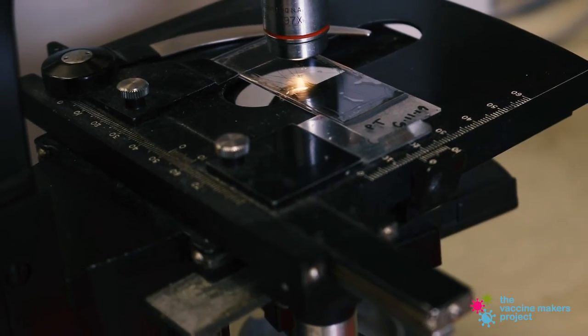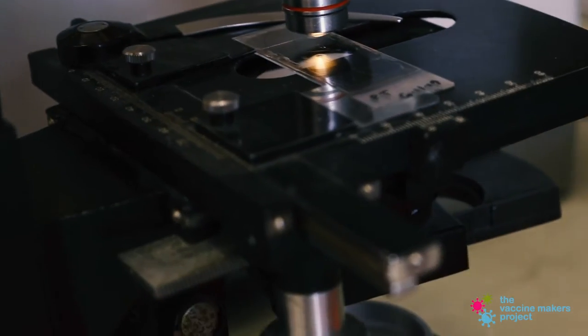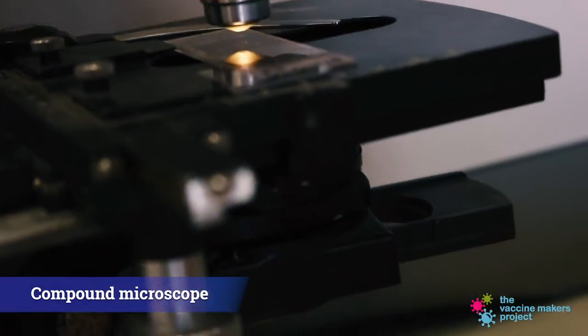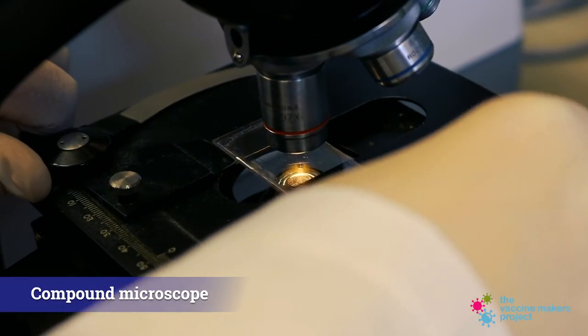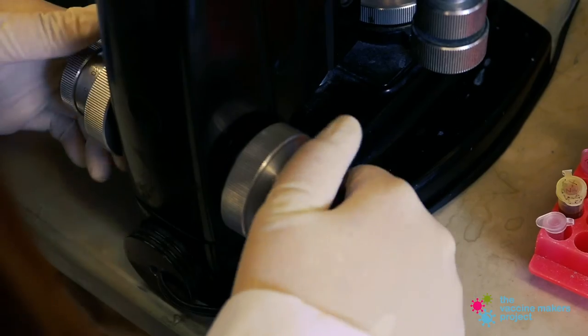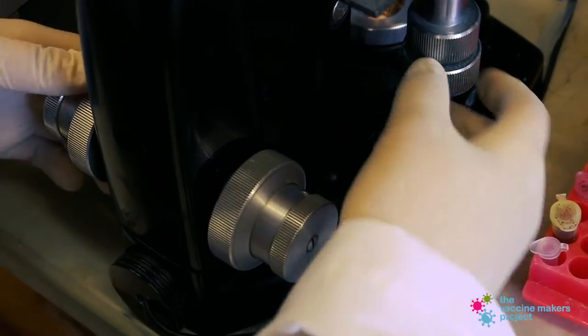The ones that you see usually in the classroom are your standard compound microscope, which means there's a lens and there are mirrors inside which reflect the light into another lens, which allows you to have greater magnification.